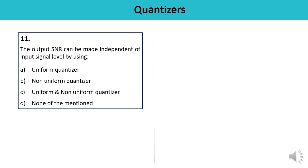Question 11: The output SNR can be made independent of the input signal level by using — uniform quantizer, non-uniform quantizer, both, or none? Weak signals experience poor SNR compared to high signal levels. A non-uniform quantizer, such as a logarithmic compressor, is used so that the signal-to-noise ratio can be made independent of the input signal level. The answer is B — non-uniform quantizer.